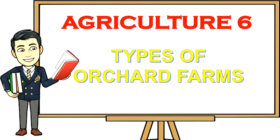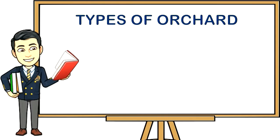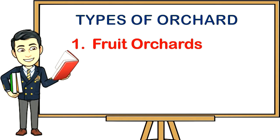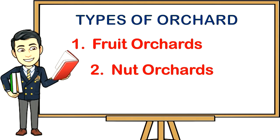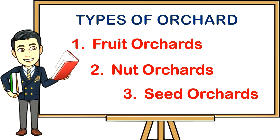Agriculture: six types of orchard farms. Knowing the different types of orchard that you want to establish in a place must be studied carefully. This lesson focuses on the following orchards: one, fruit orchards; two, nut orchards; three, seed orchards.